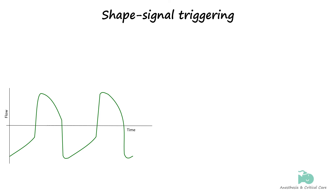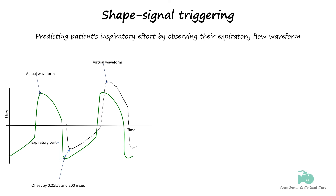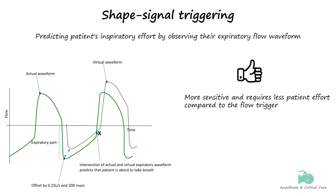Shape signal triggering is a method of predicting the patient's next inspiratory effort by observing their expiratory flow waveform. In the waveform shown, the green curve depicts the patient flow-time curve. In shape signal triggering, a virtual flow waveform called the shape signal is generated by the ventilator — this virtual signal is less than the actual flow by 0.25 liters per second and delayed by 200 to 300 milliseconds. The ventilator is triggered when the expiratory flow curves of the actual and virtual waveforms intersect. Shape signal triggering is more sensitive and requires less patient effort than flow triggering, but auto-triggering occurs more frequently as a result of its high sensitivity.